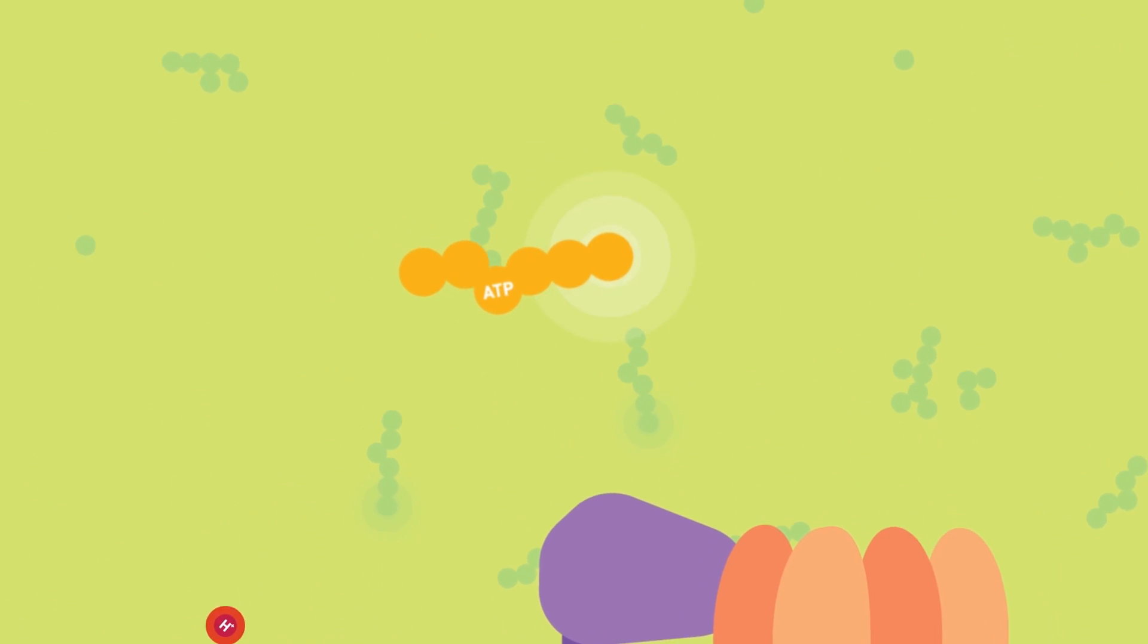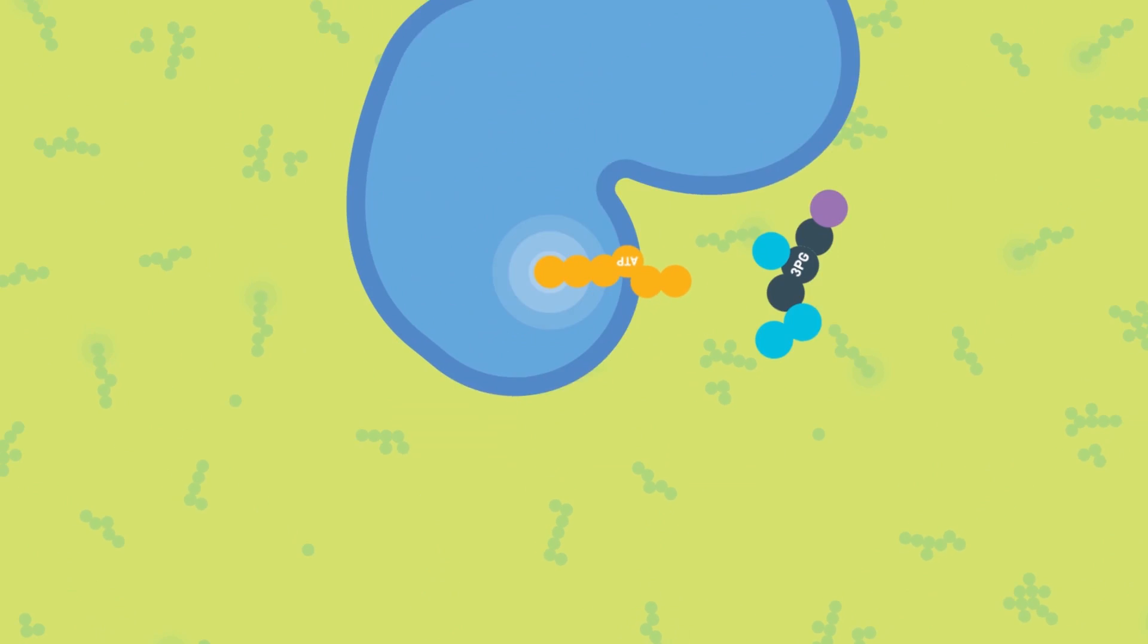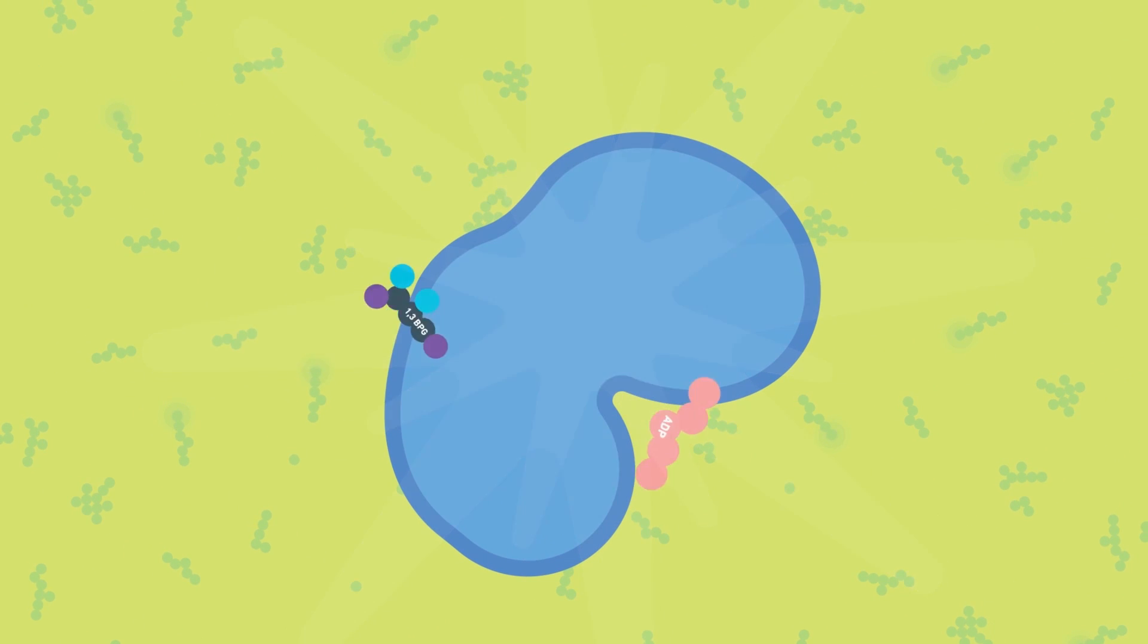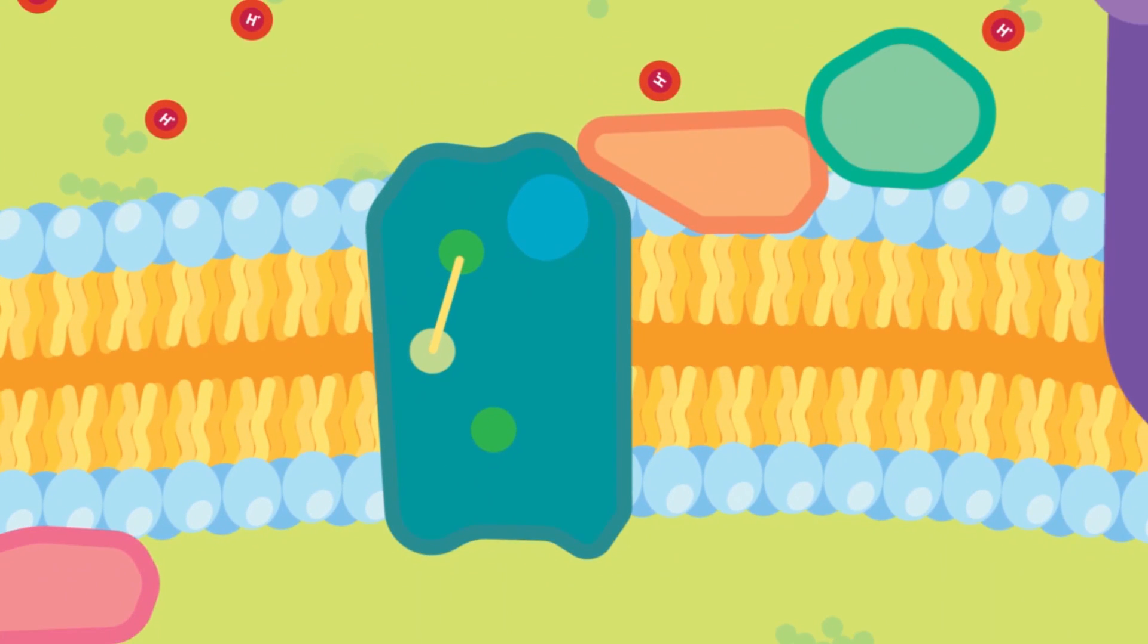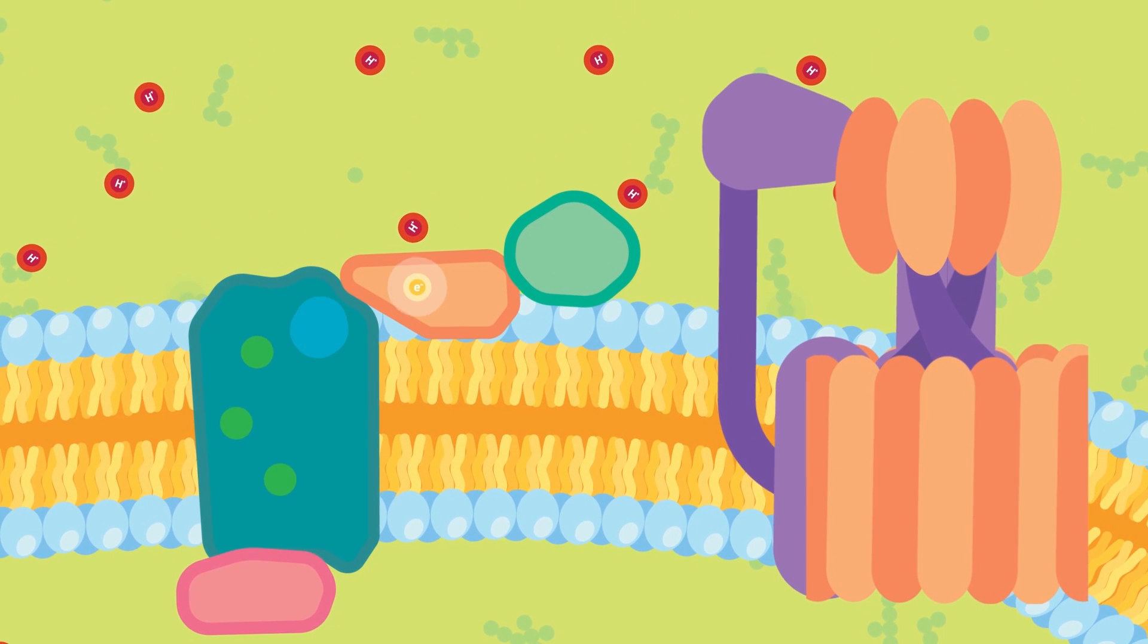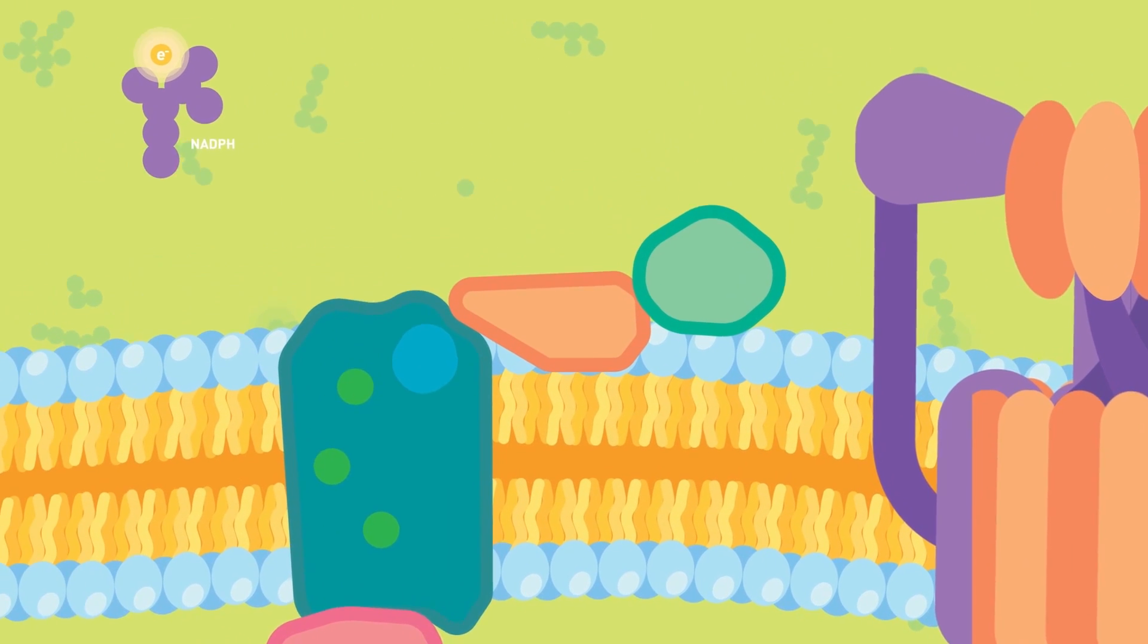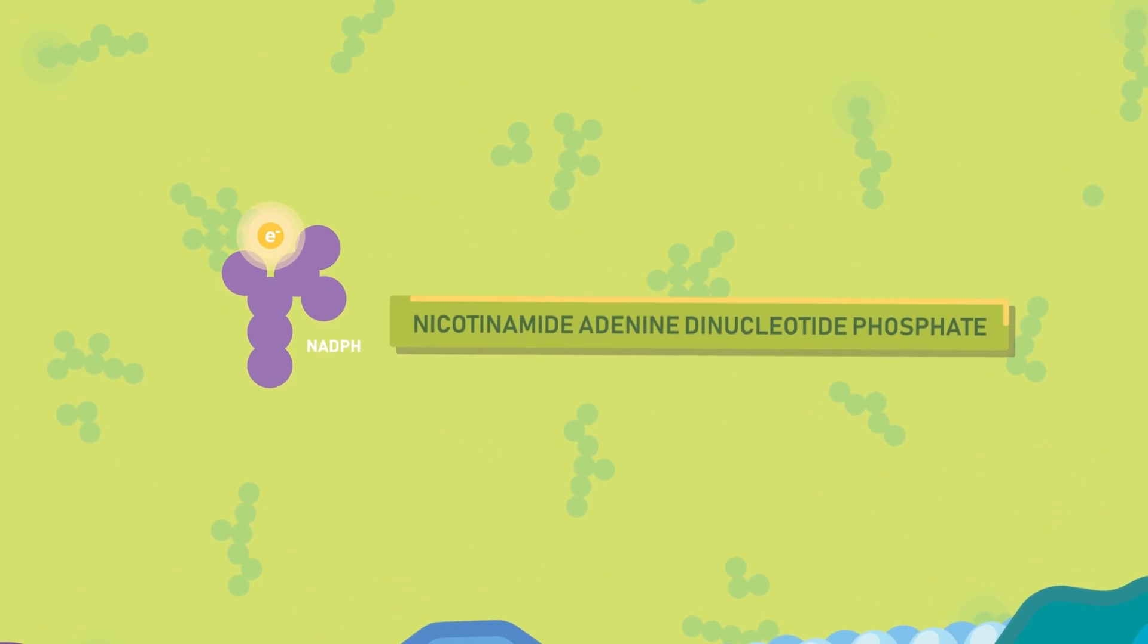The adenosine triphosphate, or the ATP, is an energy molecule that cells exchange, like currency, to release energy. The electrons going through the electron transport chain eventually end up combining with NADP+, to form NADPH, another energy-rich molecule that will be used later.